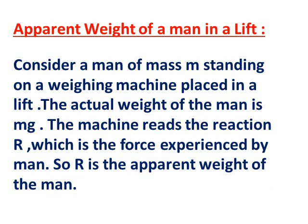Consider a man of mass m standing on a weighing machine placed in a lift. The actual weight of the man is mg and it acts vertically downward through the center of gravity g of the man. It acts on weighing machine which offers reaction R. The weighing machine reads the reaction R which is force experienced by the man. So R is the apparent weight of the man.